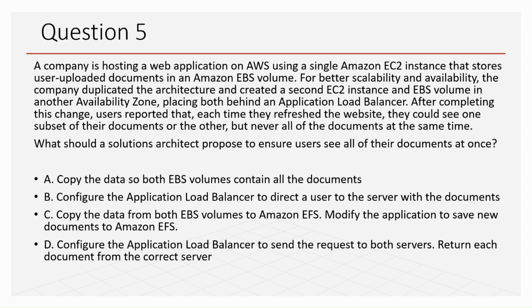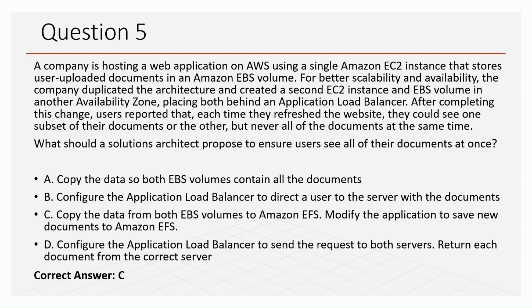Options for question five: A — copy data so both EBS volumes contain all documents and configure the ALB to direct a user to the server with their documents; C — copy data from both EBS volumes to Amazon EFS and modify the application to save new documents to Amazon EFS; D — configure the ALB to send requests to both servers and return each document from the correct server. The correct answer is Option C — copy data from both EBS volumes to Amazon EFS and modify the application to save new documents to EFS, so users can view all documents in one place.